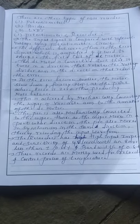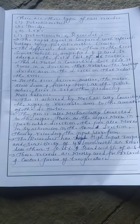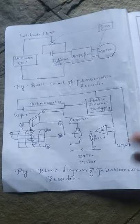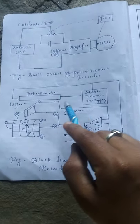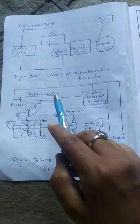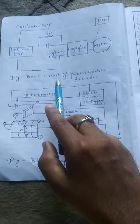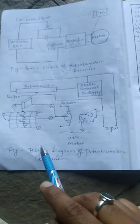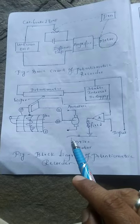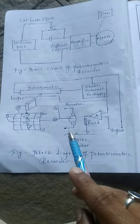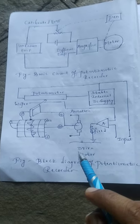First, we will discuss the concept of potentiometric recorder. This is the diagrammatic representation of potentiometric recorder. There are two diagrams: the first figure shows the basic circuit of potentiometric recorder, and the second figure shows the block diagram. Using these diagrams, we will discuss the construction and working of potentiometric recorder.